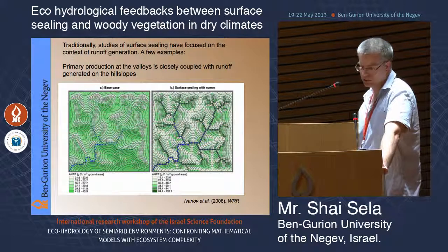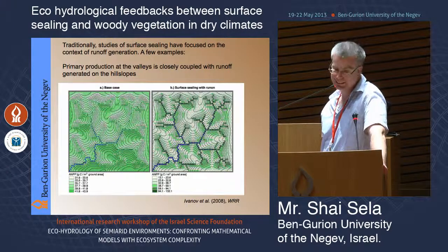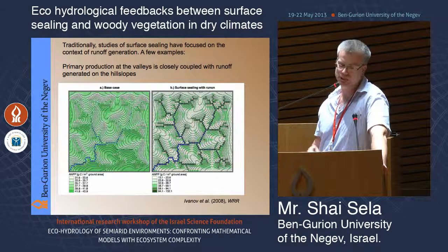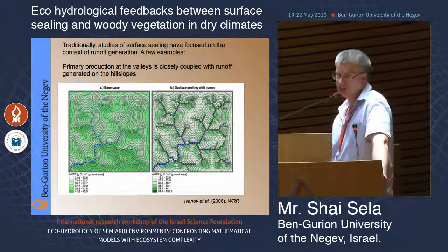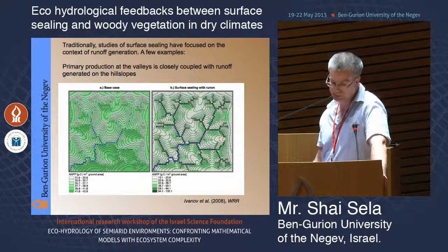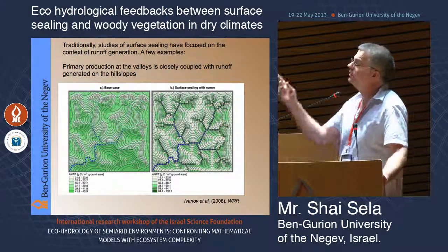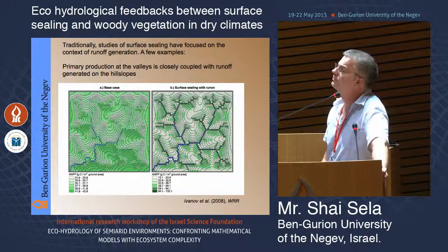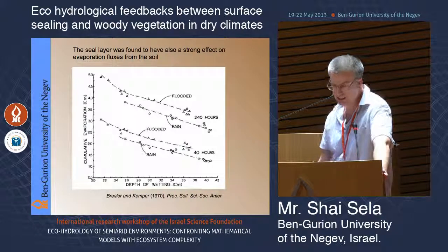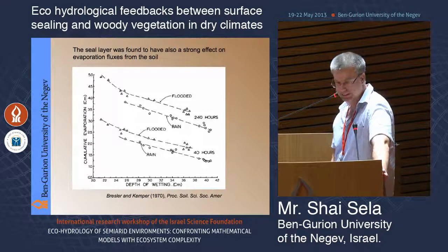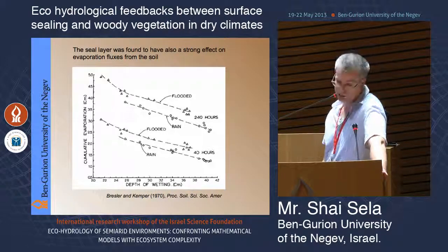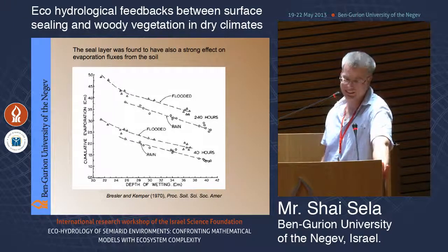A second example from Ivanov et al. 2008 shows that primary production at the valleys of the catchment is closely coupled with runoff generated on the hill slope. If you do not account for sealing, you get different primary production patterns on the valleys. The sealer was also found to have a strong effect on evaporation, and this aspect is usually disregarded — yet it is very important to account for it.